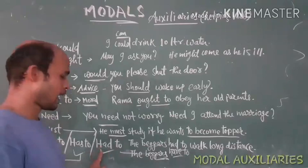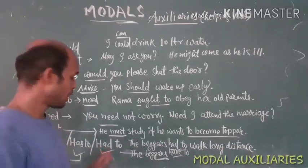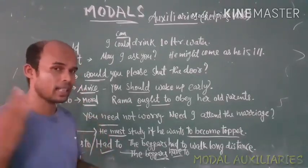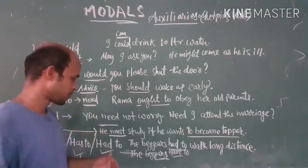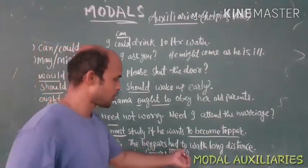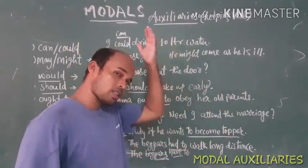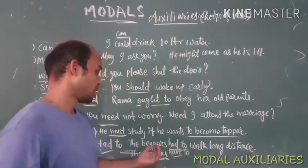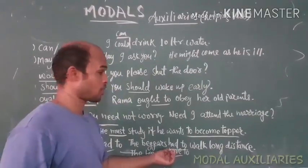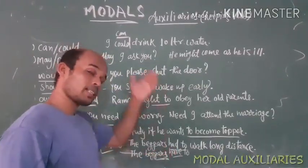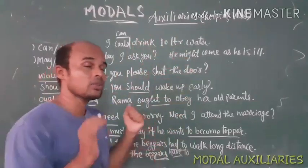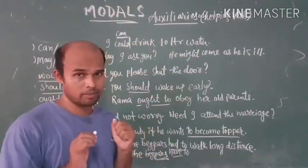Next we have had to, which tells about a past habit or past action. For example: 'The beggars had to walk long distances to search for shelter and take rest during the night time.' This describes what was done in the past, so we use had to for past tense situations.